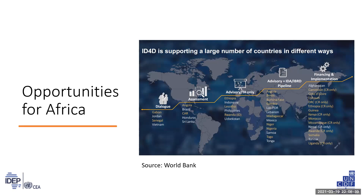Governments wishing to accelerate their digital transformation can build on a number of international initiatives, including the UN Public Administration Network's SDG-16 Knowledge Hub, the Open Government Partnership (OGP), the UN Economic Commission for Africa (UNECA), the World Bank's Identification for Development Initiative, the UN's United for Smart Sustainable Cities Initiative, and the International Telecommunications Union's standardization sector, which has several initiatives on smart sustainable cities. Thank you for your attention and interest. The next module is about cybersecurity and data privacy.